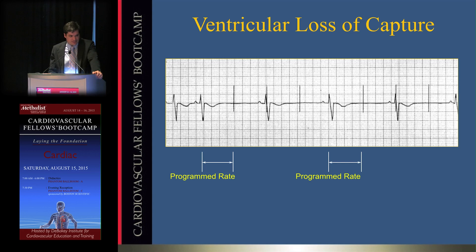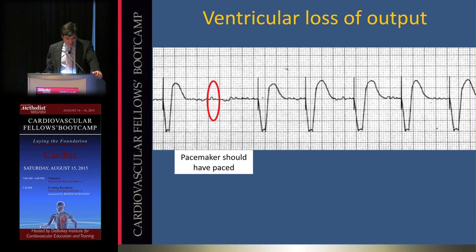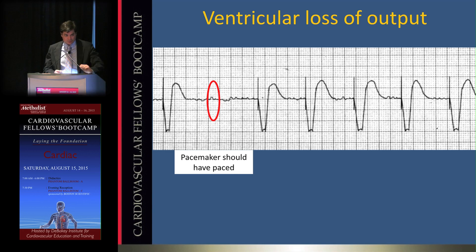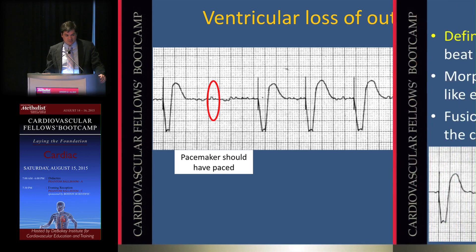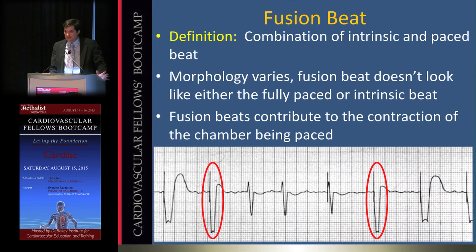Ventricular loss of output is different: there is no pacing spike visible at all. Causes include an incorrectly seated lead screw at implant, a depleted battery, or inappropriate inhibition — where the pacemaker incorrectly sensed a QRS that wasn't there and withheld output.